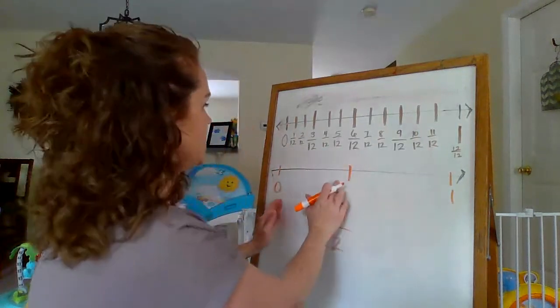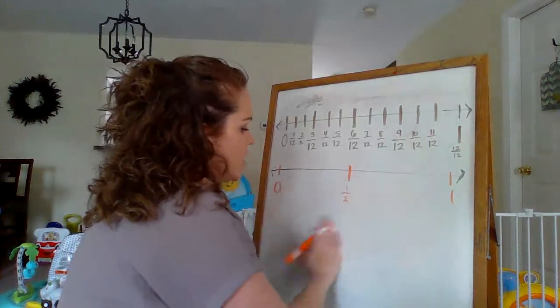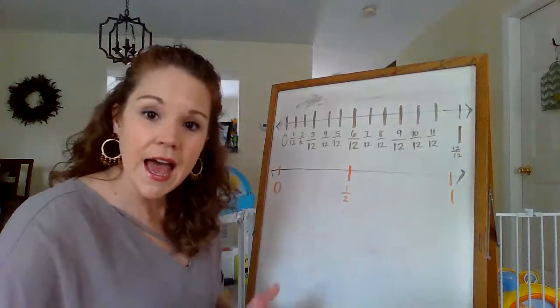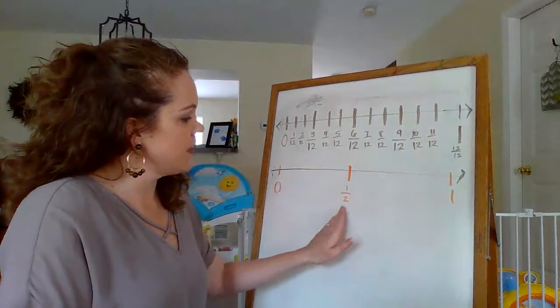So all I have to do is split this big number line into two equal parts. So I look, I say, okay, that's about equal. So here is a half. So if I want to compare a half to my twelfths, I just look and see what lines up.